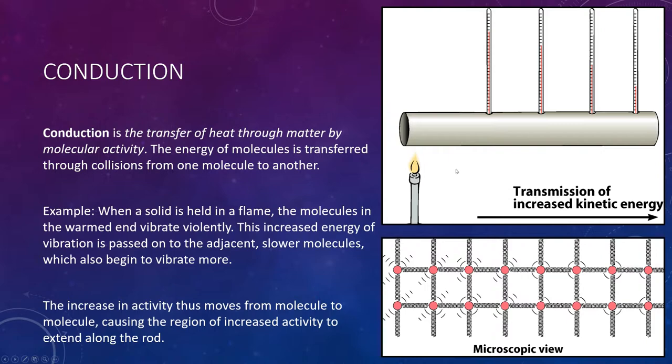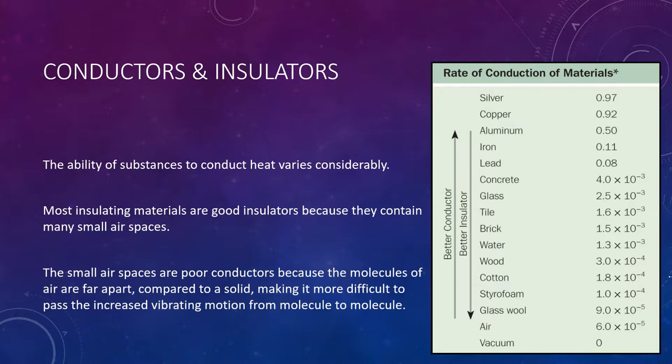The temperature is higher on one end and lower on the other. A molecular view shows increased vibrations where it's hot, and that energy radiates downward. The ability of a substance to conduct heat varies considerably. Most insulating materials are good insulators because they contain many small pockets of air. The small air spaces are poor conductors because the molecules of air are far apart compared to a solid, making it more difficult to pass the increased vibration motion from one molecule to the next.